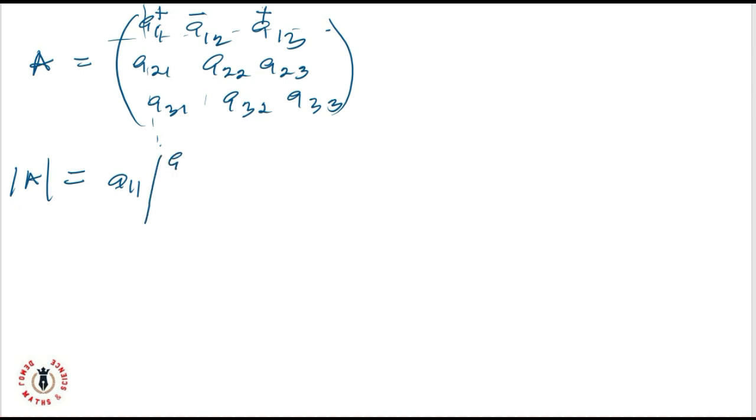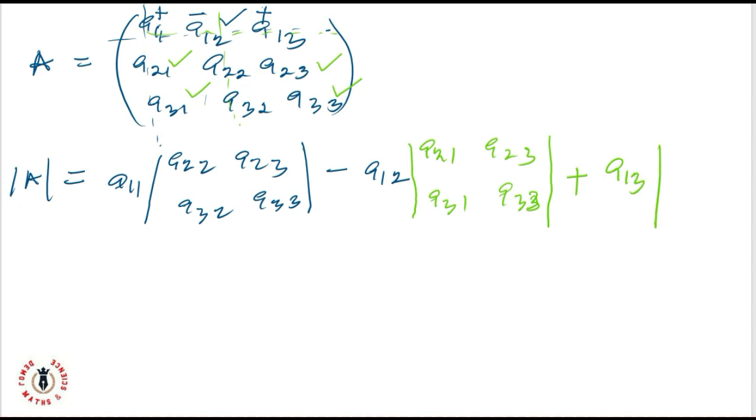So, it becomes A22, A23, A32 and A33. Minus the determinant of A12 because A12, if you look at it carefully, has the sign to be negative. The items out of that line is A21, A31, A23 and A33. That will be A21, A23, A31 and A33. Plus A13 into A21, A22, A31 and A32.